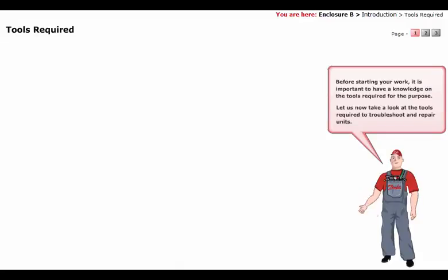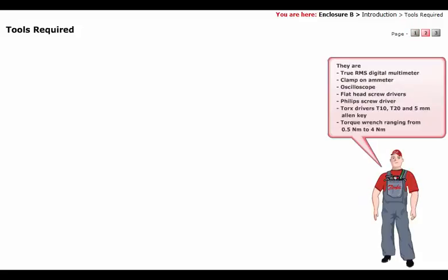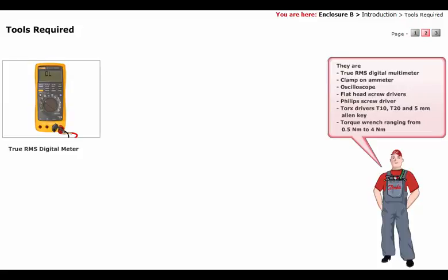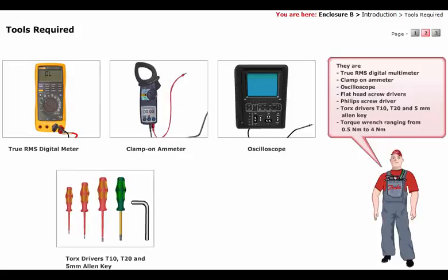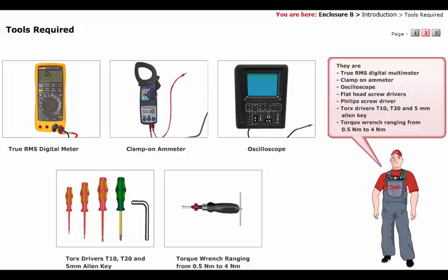Before starting your work, it is important to have a knowledge on the tools required for the purpose. Let us now take a look at the tools required to troubleshoot and repair units. They are: True RMS Digital Multimeter, Clamp-on Meter, Oscilloscope, Flathead Screwdrivers, Phillips Screwdrivers, Torx Drivers T10, T20, and 5mm Allen key, and Torque wrench ranging from 0.5 Nm to 4 Nm.